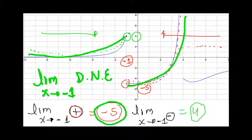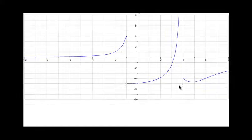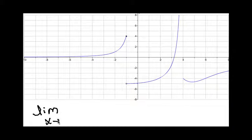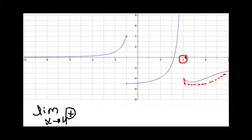Let's do another example. Let's find the limit when x approaches 4 from the right. The first step is to find where x equals 4 is. Coming from the right, I go all the way and get really close to the function approaching 4. I see here that the value is going to be negative 4. So this limit from the right is negative 4.